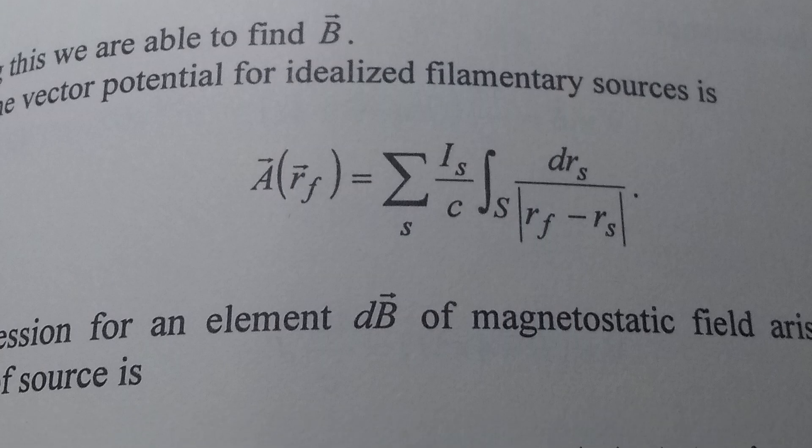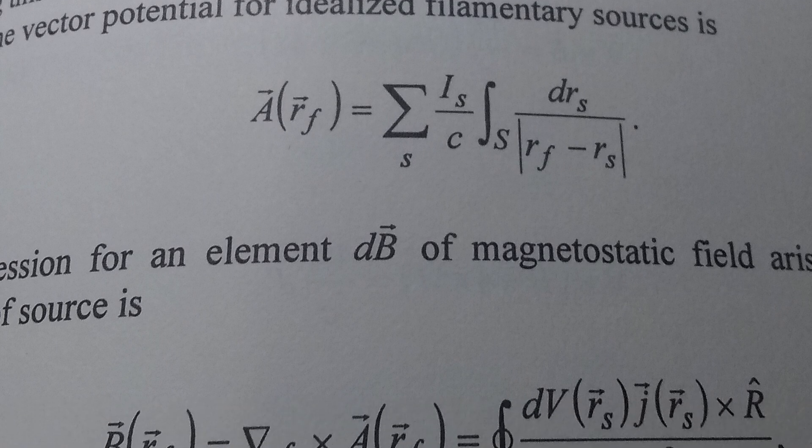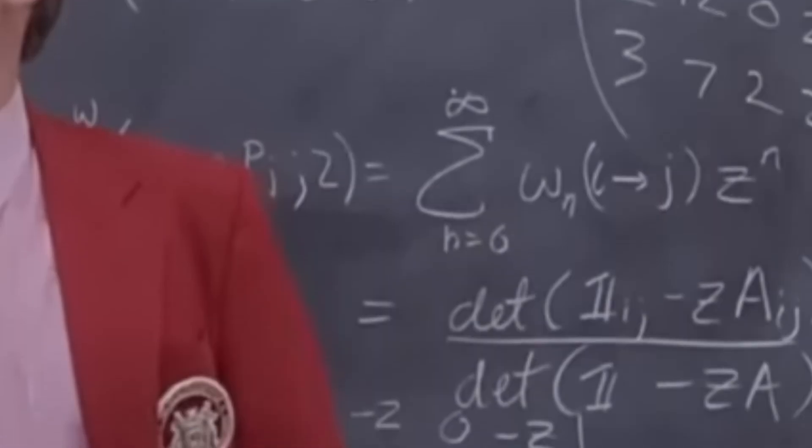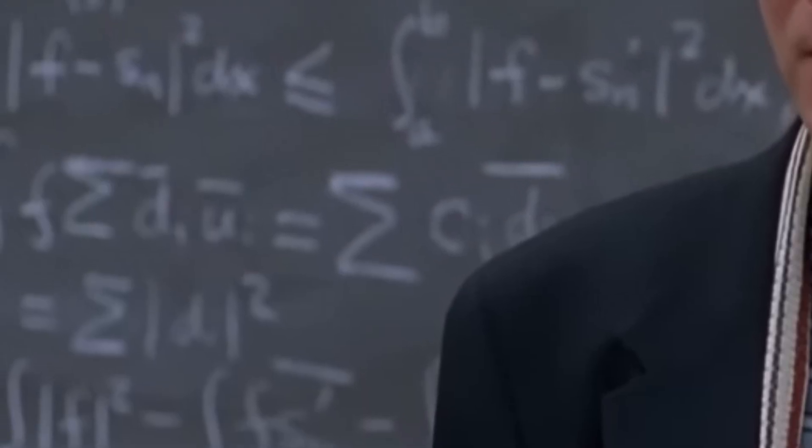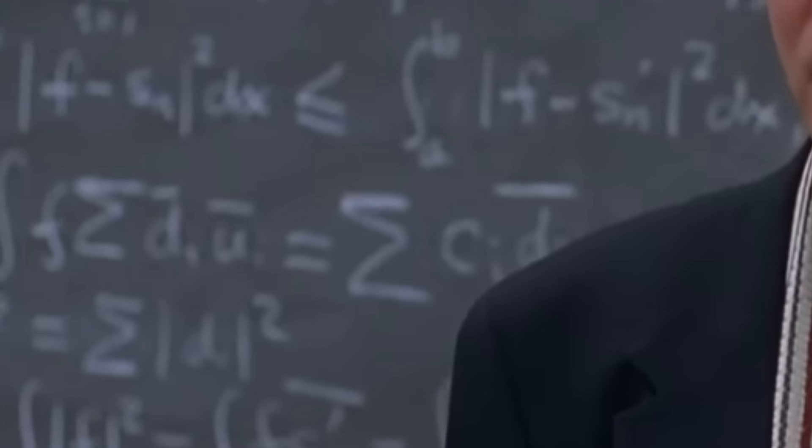I always found those strange complicated equations somehow alluring. They had a kind of unique aesthetic, a kind of beauty. And seeing math in movies fascinated me. What were those strange equations on the blackboard behind the actors?